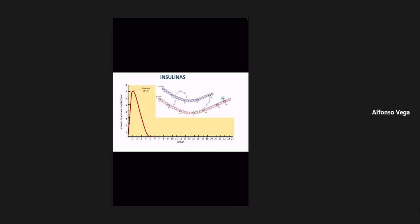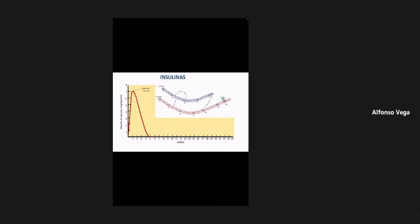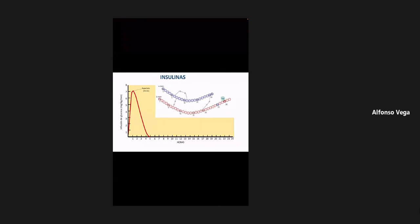Esto ya lo habíamos comentado anteriormente la semana pasada. Ya se había dicho que había distintos tipos de insulina desde el punto de vista de la vida media, y que de acción corta, que empiezan a actuar prácticamente de 10 a 15 minutos después de que las empezamos a utilizar, existen tres: una que es la aspartato, otra que es la lispro y otra que es la glulicina.